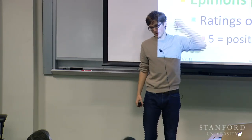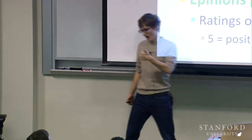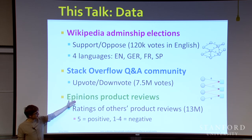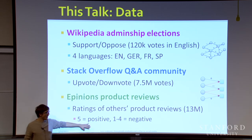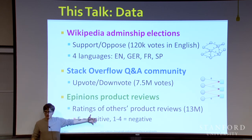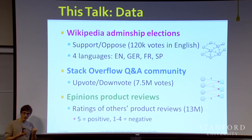The second data set is Stack Overflow, a programming question-answering community with millions of questions and answers, where people upvote or downvote questions and answers — around 7 million votes. The third is Opinions.com, a product review site where people rate each other's product reviews. To binarize the ratings, since most are positive, we use the five-star rating as positive and one-to-four stars as negative.